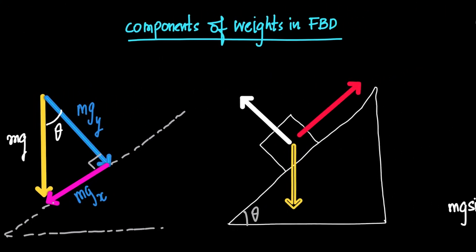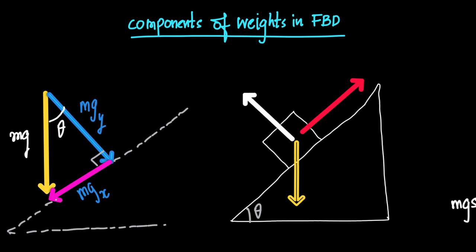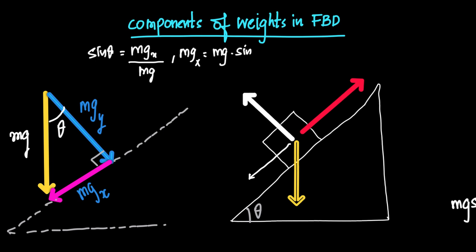Once we have this triangle, we can write down the components of weight. In the free body diagram, the side opposite to theta is mgx and the side adjacent to theta is mgy. So what is sine theta in this triangle? Sine theta equals mgx divided by the hypotenuse mg. Therefore, mgx can be written as mg sine theta.